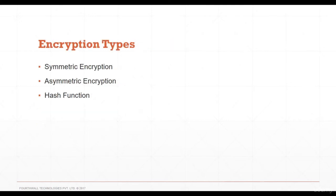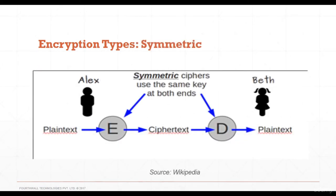Three encryption mechanisms exist: symmetric encryption, asymmetric encryption, and hash functions. In symmetric encryption, the sender and receiver use the same key for both encryption and decryption. The plain text gets encrypted using the symmetric key, and the resulting cipher text can be decrypted using the same key.